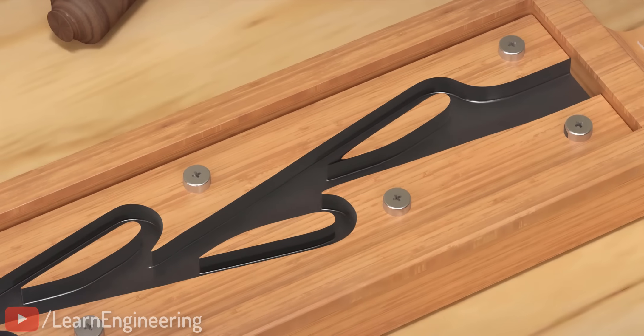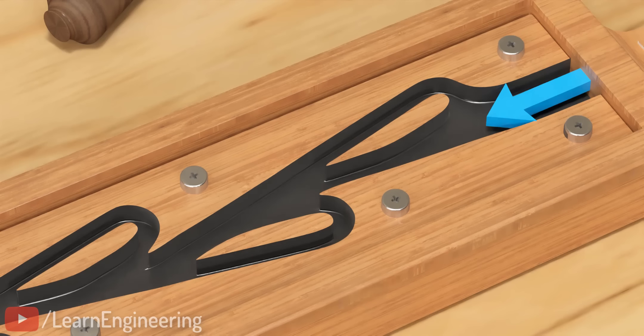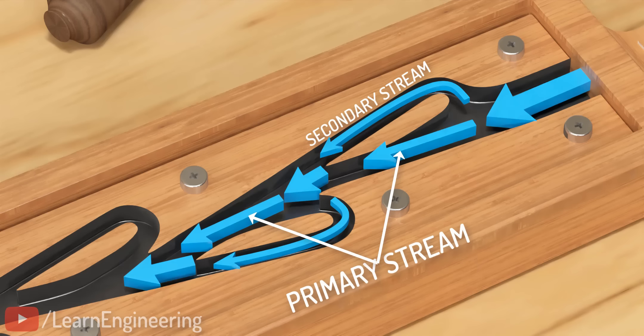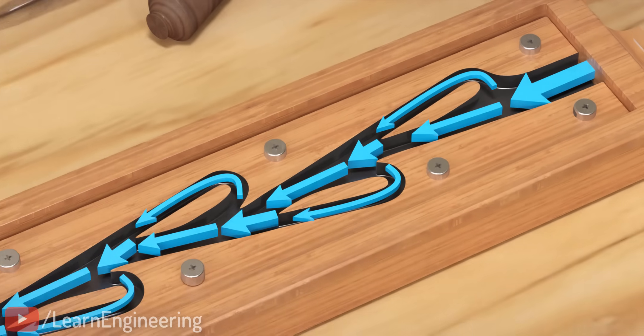Let's consider the right to left flow first. Initially, the flow is divided into two streams. Obviously, the secondary flow will be very low since the fluid has to take an unnecessary turn to enter that region. This means the majority of the flow will be due to the primary stream, and it will go almost in a straight line, without much obstruction.